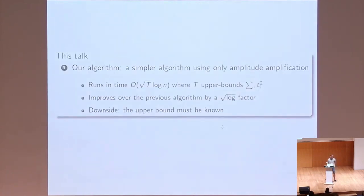Our contribution is two-fold. First of all, we show a simpler variable time search algorithm. In particular, it uses only amplitude amplification without necessity to perform amplitude estimation steps. And that, among other things, allows for tight analysis of this algorithm, improving this complexity. But it all comes with a cost, because this algorithm assumes that we know an upper bound on the sum of squares.